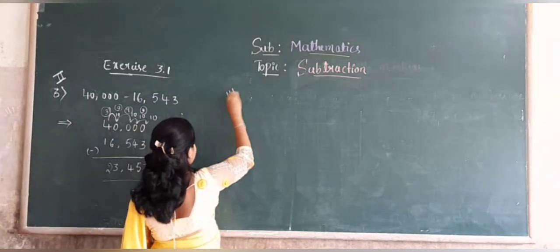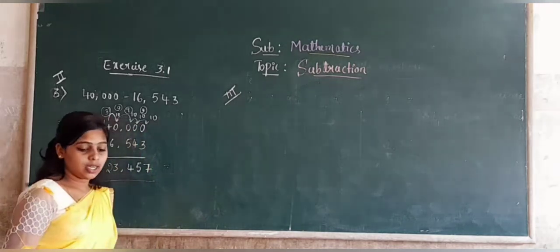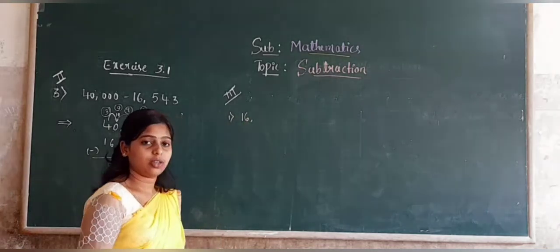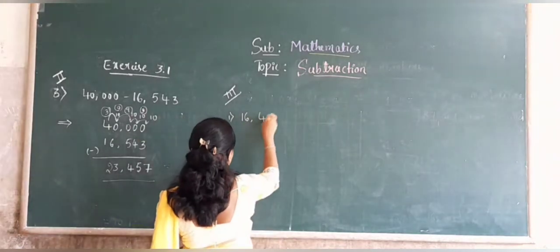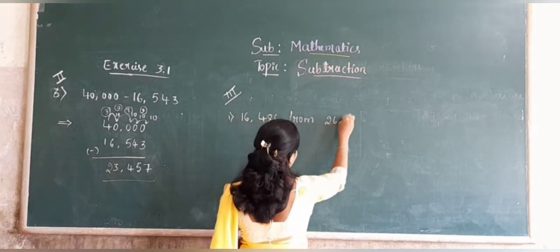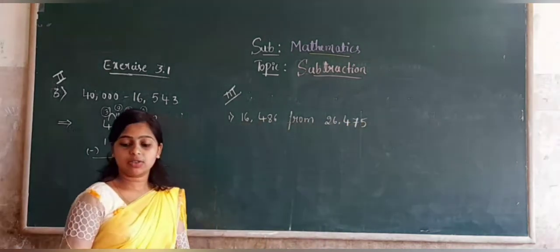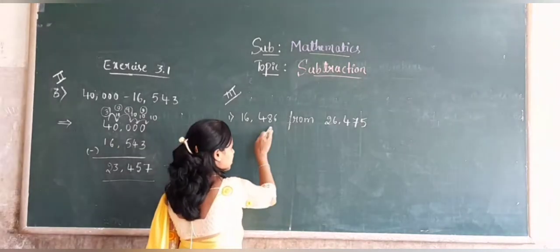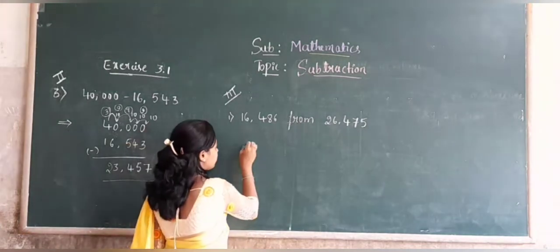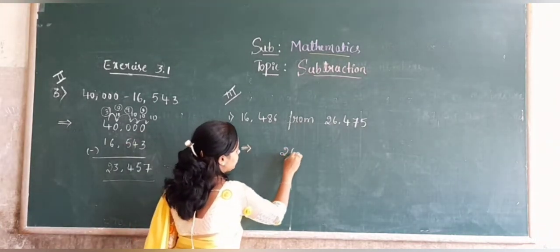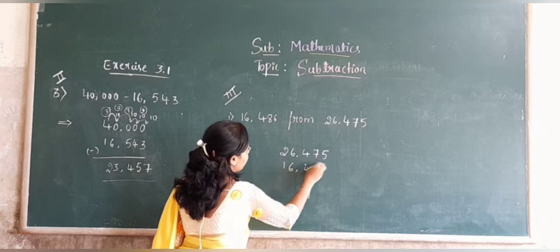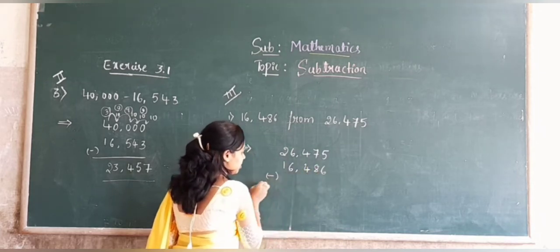Next, we move on to the third section. First problem: subtract 16,486 from 26,475. We have 26,475 minus 16,486. Now subtract these two numbers.